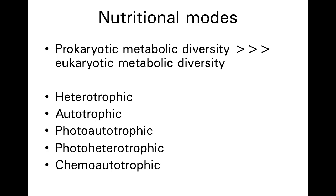So prokaryotes can do all of these different things. Eukaryotes can do the first three, but we don't usually see photoheterotrophs or chemoautotrophs among the eukaryotes.